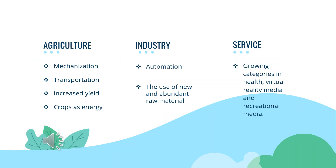Mechanisation, transportation, increase of yield, and crop as energy are the positive impacts in the agriculture area. For the industry area, automation and the use of new and abundant raw materials are positive impacts. Lastly, the services area also has positive impacts on the environment in growing categories in health, virtual reality media, and recreational media.